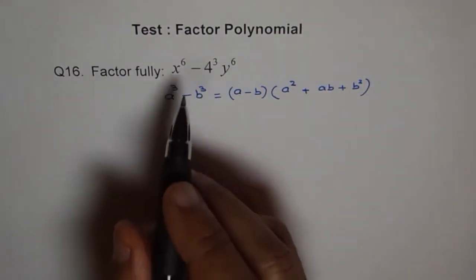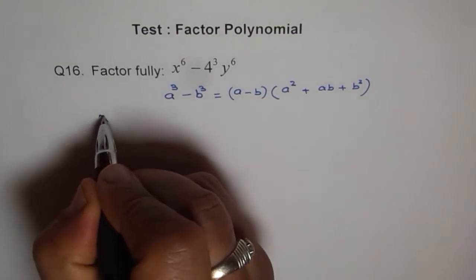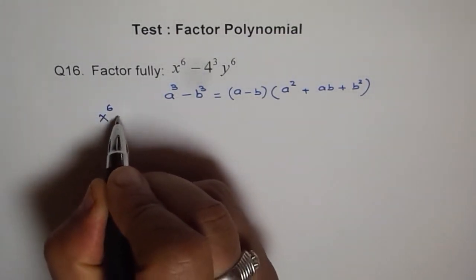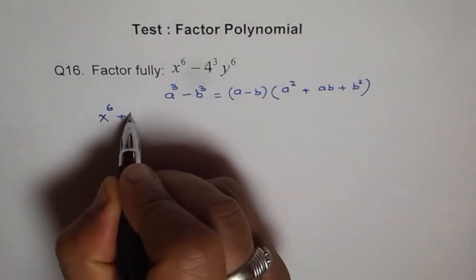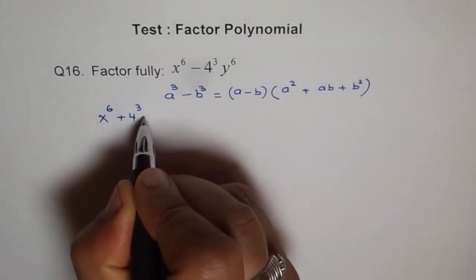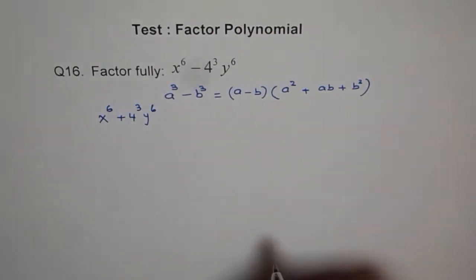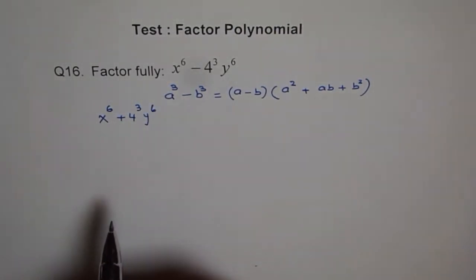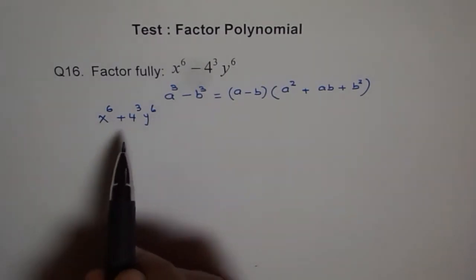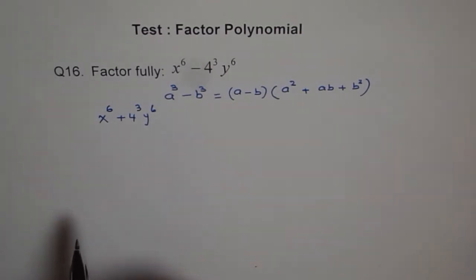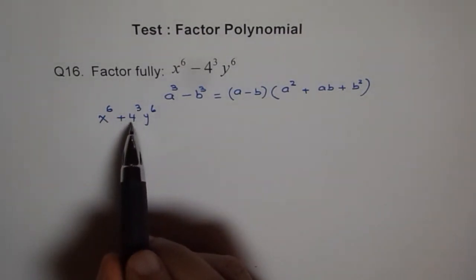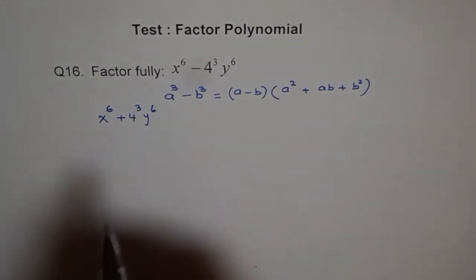The given problem is x to the power of 6, plus 4 to the power of 3, y to the power of 6. We need to write this in a cube b cube form. Notice that 4 can be written as 2 square, and if we write 4 as 2 square, then it becomes 2 to the power of 6.